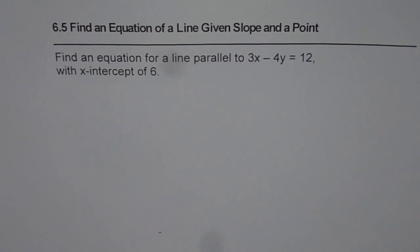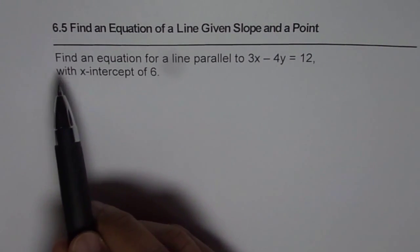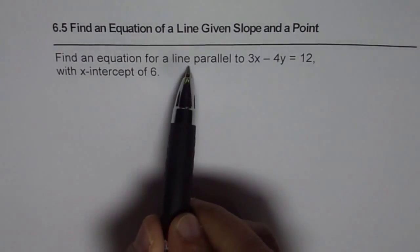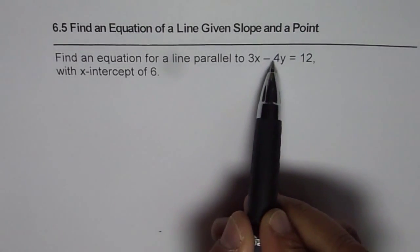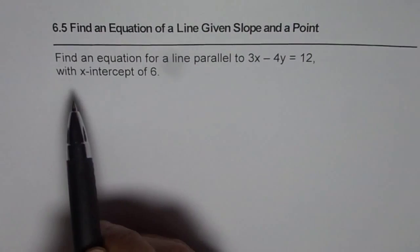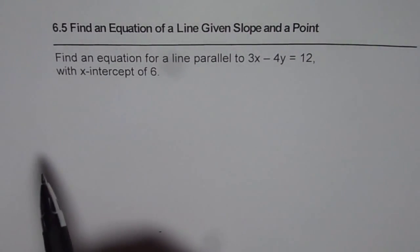I am Anil Kumar and now we will explore how to find equation of a line when we are given slope and a point. The question here is, find an equation for a line parallel to 3x minus 4y equals to 12 with x intercept of 6.